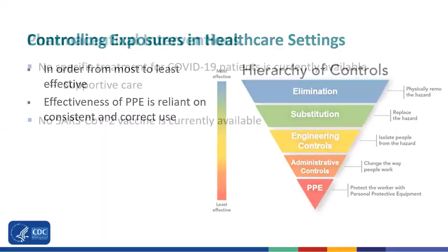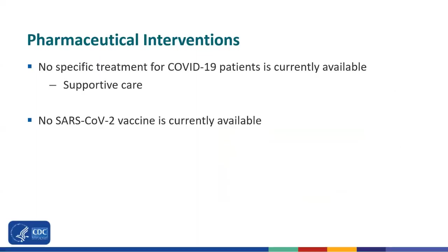To frame the importance of these controls, it's important to understand that there is currently no specific treatment for COVID-19 patients; the primary treatment is supportive care. Further, there is no vaccine currently available for SARS-CoV-2. Hence, we rely heavily on these controls to prevent transmission to healthcare personnel who may be exposed while performing job duties, and we rely on personal protective equipment for safety during close interactions with patients needed to provide medical care.